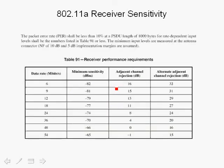Looking at the receive sensitivity table for 802.11a, we show data rates from 6 megabits per second up to 54 megabits per second. The second column shows the minimum sensitivity — the input power at the antenna — required to achieve a 10% packet error rate with a PSDU length of 1000 bytes, meeting the sensitivity requirements for 802.11a. Most vendors beat these requirements and have much better sensitivity.